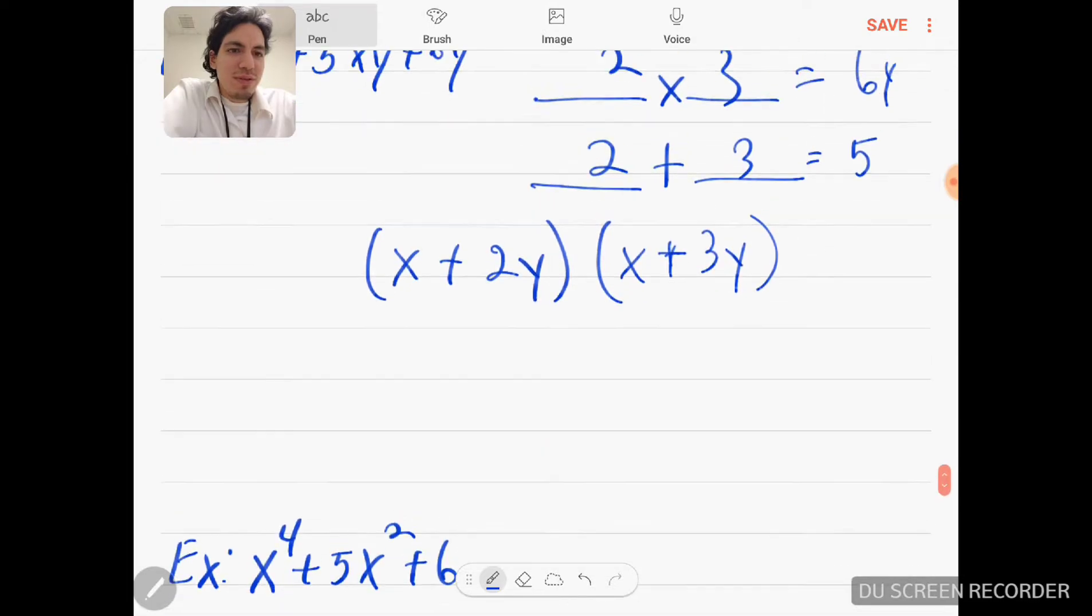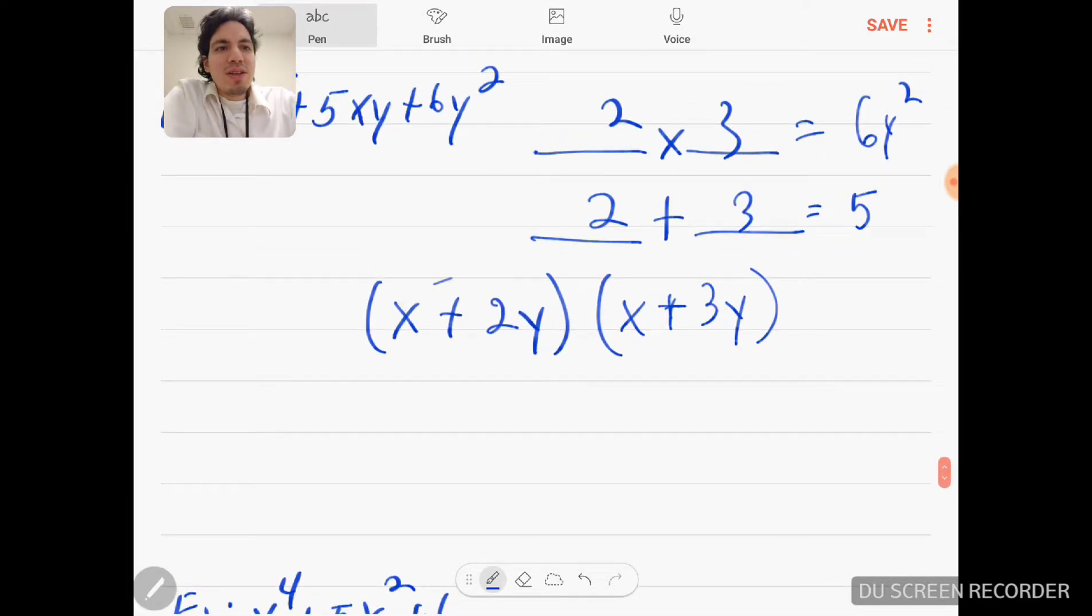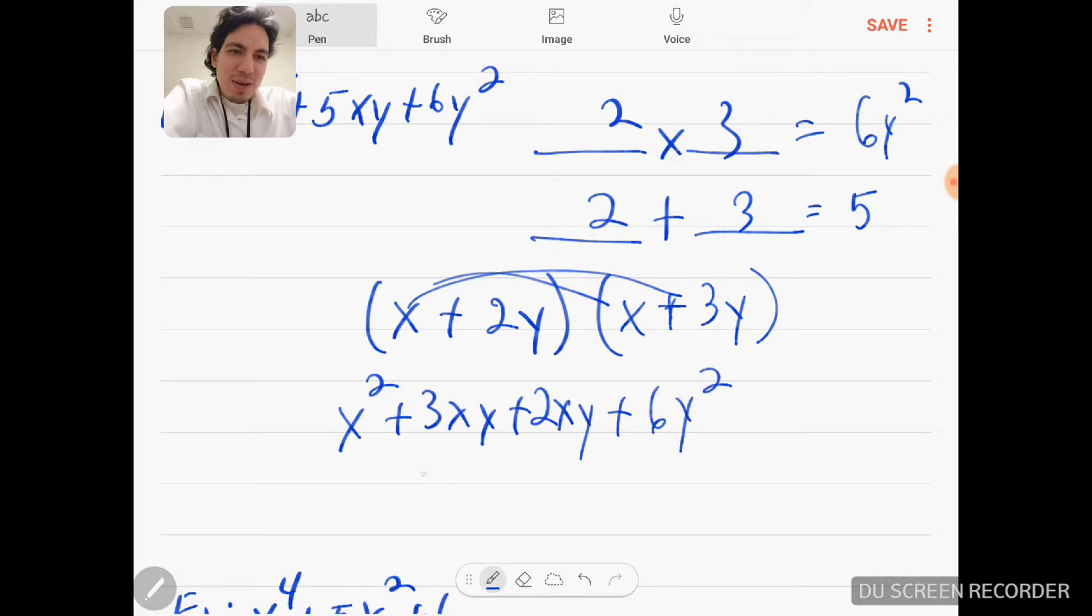Yeah, I'll definitely prove it to you. x times x would be x squared. x times 3y would be 3xy, plus 2xy, plus 6y squared. I combine this: x squared plus 5xy plus 6y squared as your answer. So it checks out.